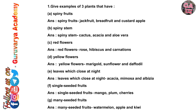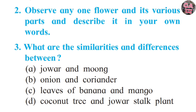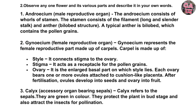Here we completed our first question. Now move towards the second question: Observe any one flower and its various parts and describe it in your own words. Answer — Androecium: the androecium consists of walls of stamen.